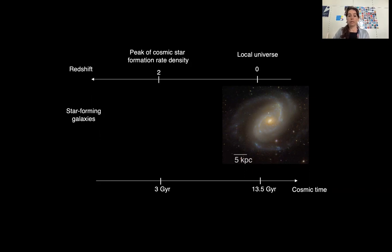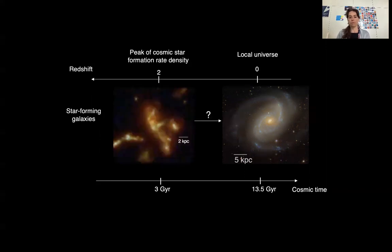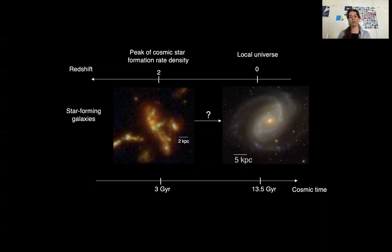If we look at star-forming galaxies at high redshift, around redshift 2, where the peak of the cosmic star formation rate density is, the picture is quite different. These galaxies, which are typical progenitors of Milky Way-like galaxies, have irregular morphologies and don't really show a central bulge. Their structure is dominated by bright blue patches typically called clumps. The question is how we go from this irregular morphology at redshift 2 to the regular morphology in the local universe, and how bulges are formed in this structural evolution.